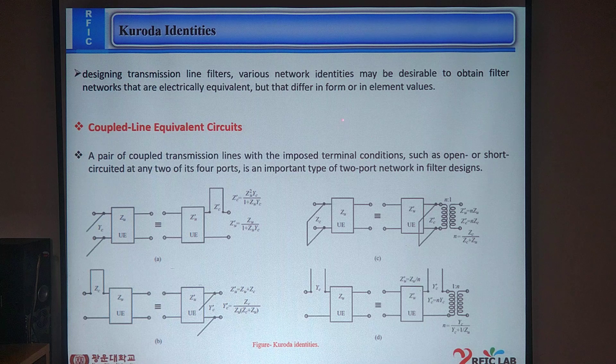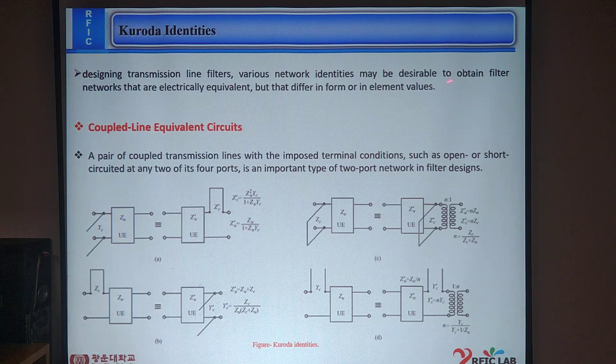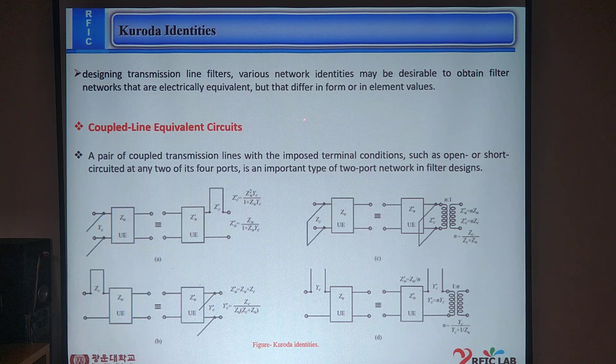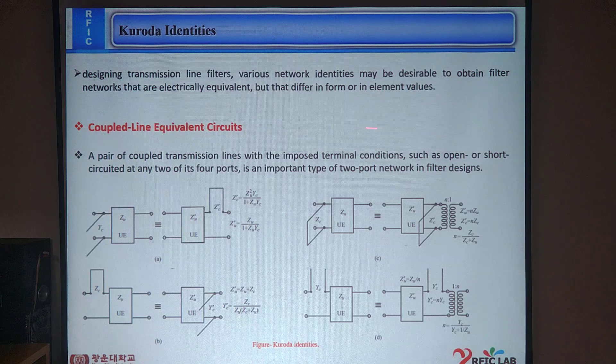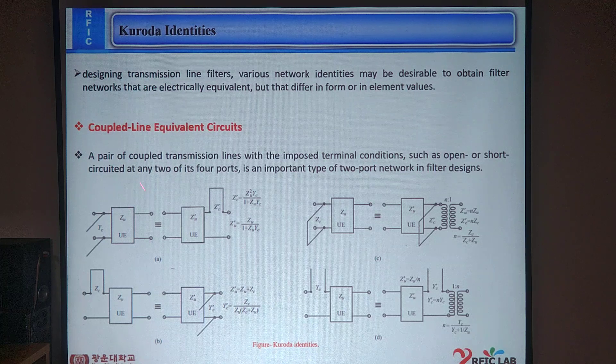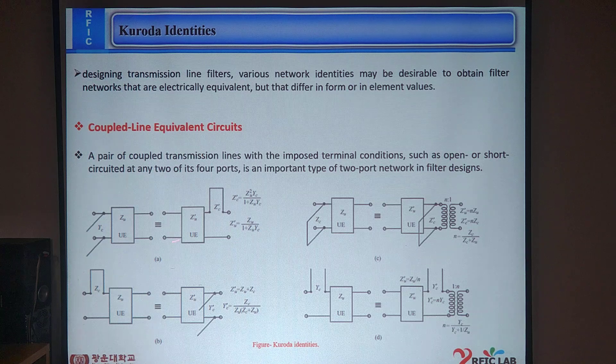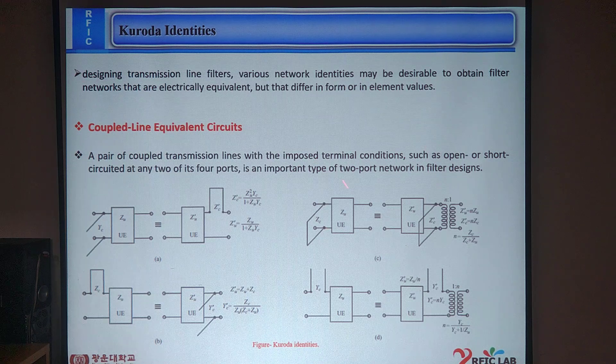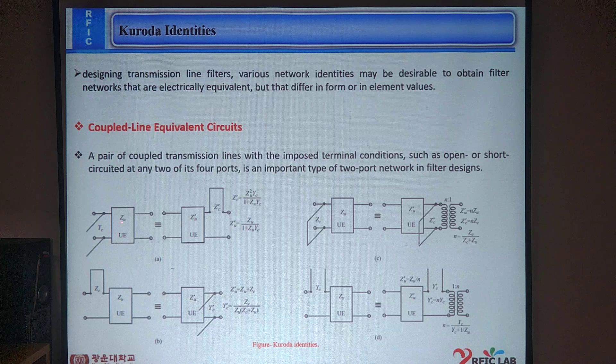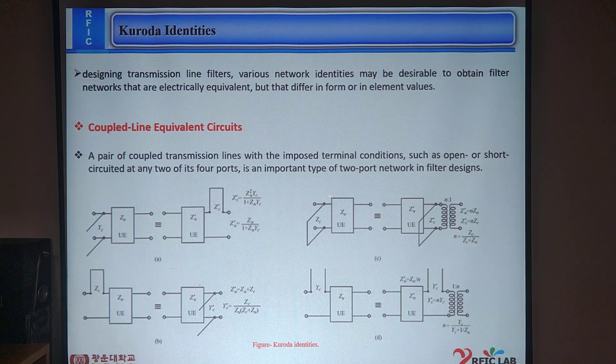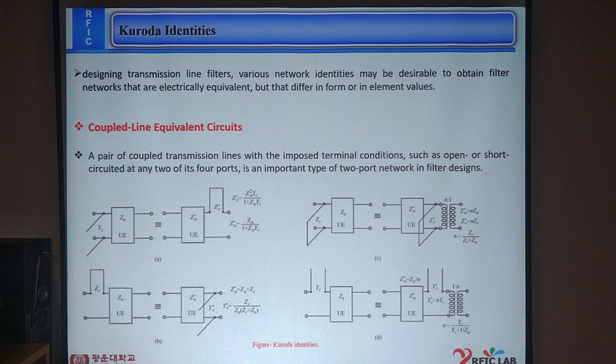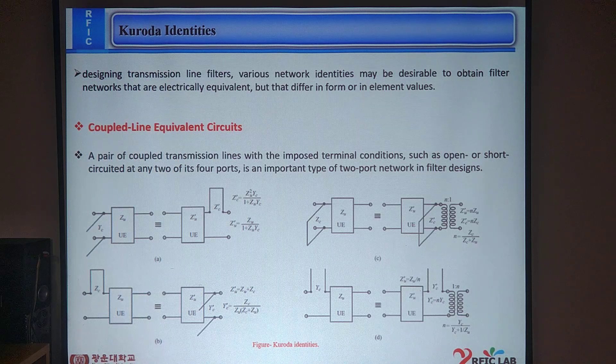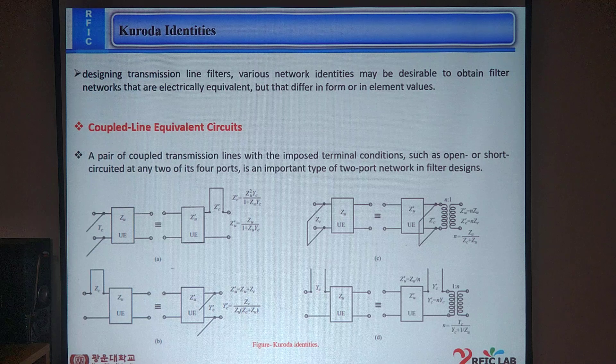Designing transformation line filters, various network identities may be desirable to obtain filter networks that are electrically equivalent but differ in form or in argument values. That's why it is coupled line equivalent circuit. A pair of coupled transmission lines with port terminal conditions such as open or short circuited at any one and two four-port is an important type of two-port network in filter designs. These are Kuroda identities. Here we can see in Figure A, Figure B, Figure C and Figure D expressing the Kuroda identities.